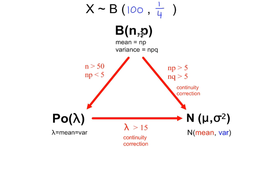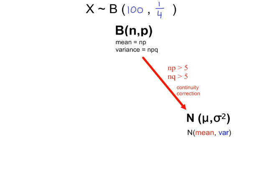This is the approximation distributions triangle, and we're interested in going from the binomial to the normal. Let's see if these two conditions are met. n times p, multiply these two together, so we get 25. And that value is more than 5, so that condition is met.